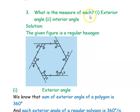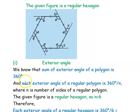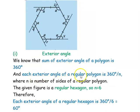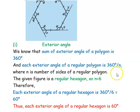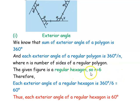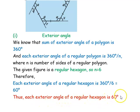The next question asks for the measure of each exterior angle and each interior angle. We have seen the sum of exterior angles; now we find each individual angle. The sum of exterior angles of a polygon is 360 degrees. Each exterior angle of a regular polygon is given by 360° ÷ n, where n is the number of sides. Here n = 6, so each exterior angle = 360° ÷ 6 = 60 degrees. Thus each exterior angle of the given regular hexagon is 60 degrees.